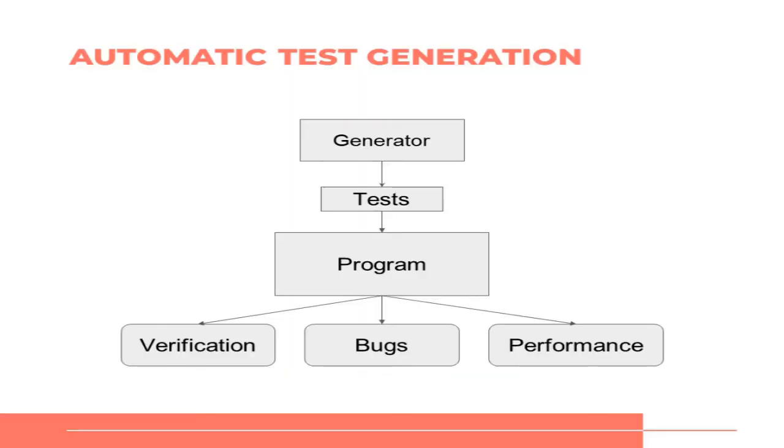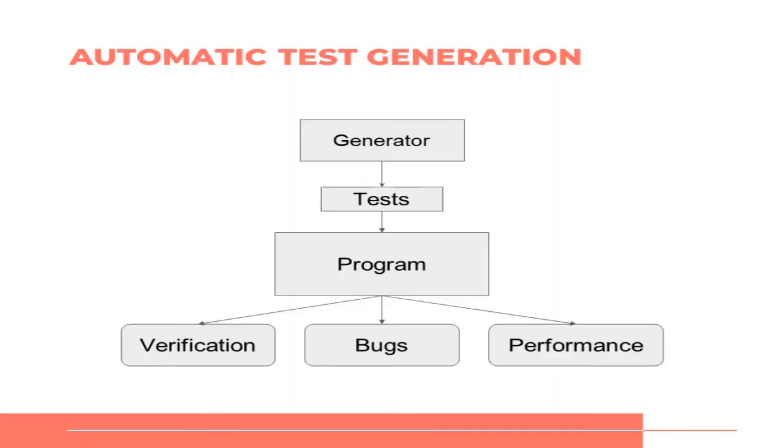Now we want to apply Ant Colony Optimization to automatic test generation, seeing how it can help in software engineering. The first thing is to define the problem of automatic test generation. Normally when testing a program, you write tests manually in Java or C, run them, and check assertions for input-output. With automatic test generation, you try to cover as much of the program as possible using criteria such as branch coverage, line coverage, or path coverage.